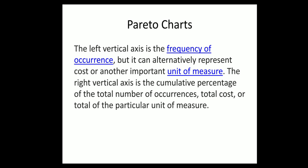The left vertical axis is the frequency of occurrence, but it can alternatively represent cost or another important unit of measure. The right vertical axis is the cumulative percentage of the total number of occurrences, total cost, or total of the particular unit of measure.